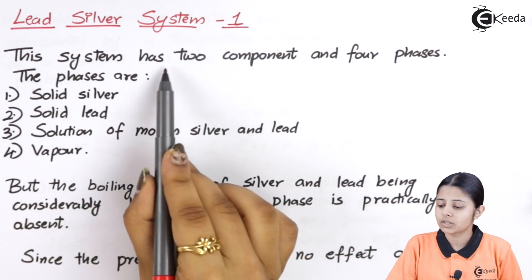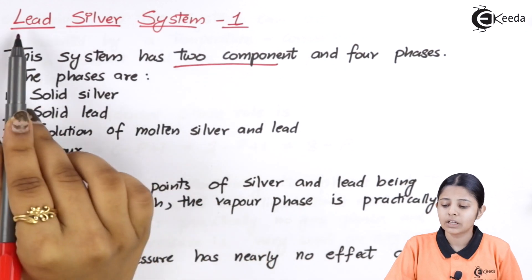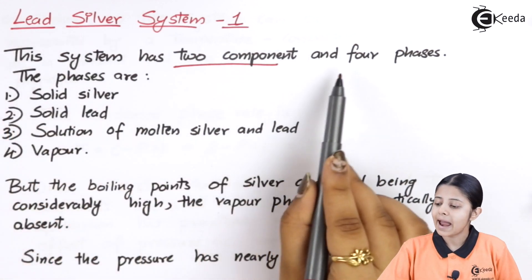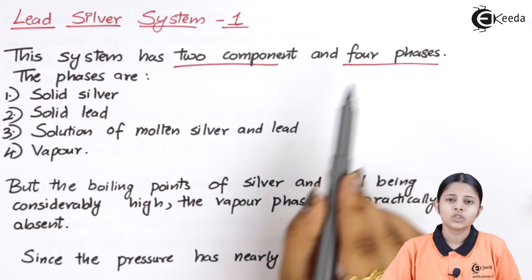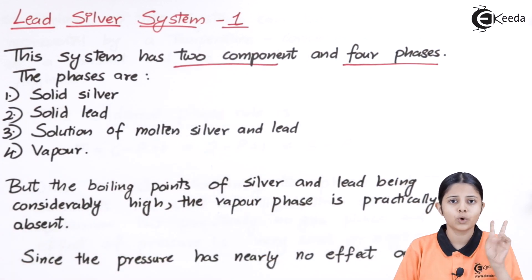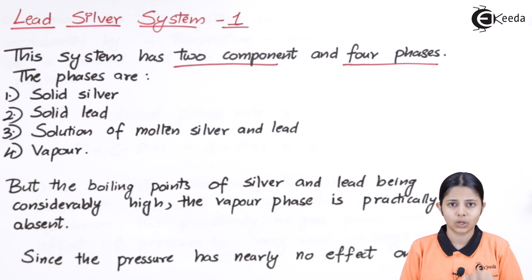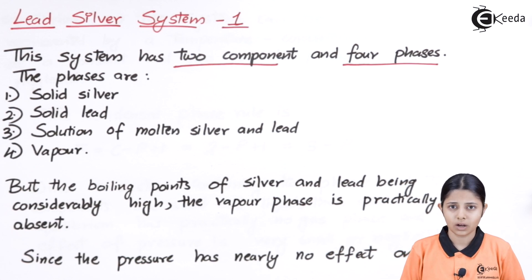This system has two components: lead and silver. It also has four phases. Generally, two components can have any number of phases. If both components are solid, it becomes one phase; if both are liquid, again one phase; if one is solid and one is liquid, it becomes a two-phase system. But here we are saying it is a four-phase system, so let us understand how those four phases occur.